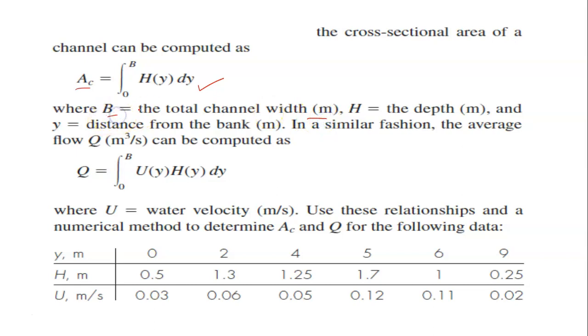Where B is the total channel width in meters, so given here B, the total channel width, which is this one. H is the depth in meter, and Y is the distance from the bank in meters.